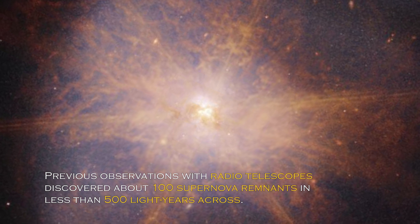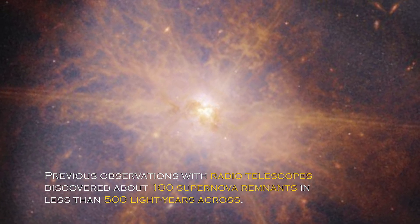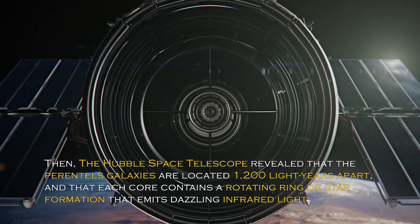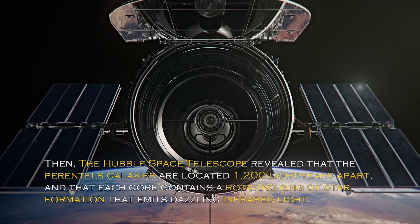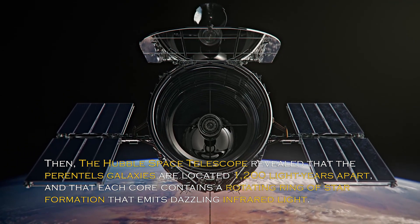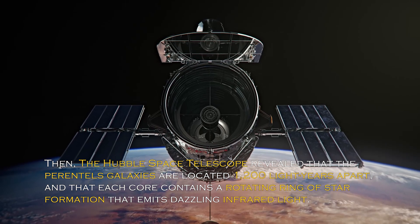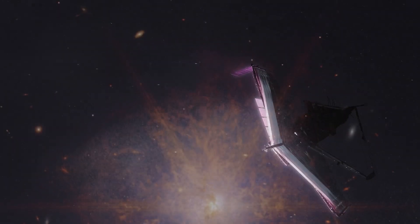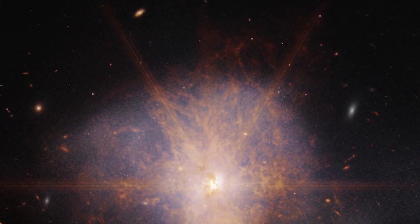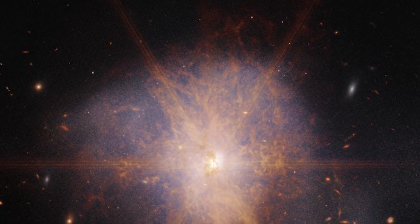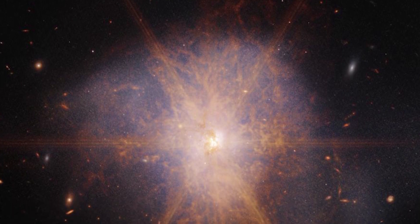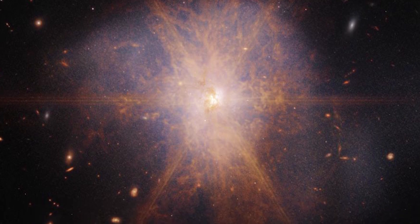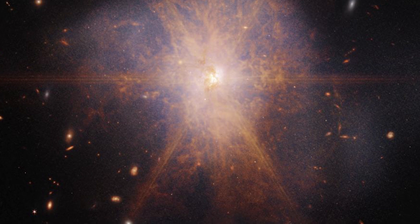Previous observations with radio telescope discovered about 100 supernova remnants in less than 500 light-years across. Then, the Hubble Space Telescope revealed that the parent galaxies are located 1,200 light-years apart, and that each core contains a rotating ring of star formation that emits dazzling infrared light. The latest views from the James Webb Space Telescope shows an impressive galactic merger of the two galaxies. This image also shows faint tidal tails extending from the outskirts of the merger, indicating the gravitational pull between the two galaxies. Finally, the reddish and orange streams and filaments represent scattered organic materials in ARP 220.